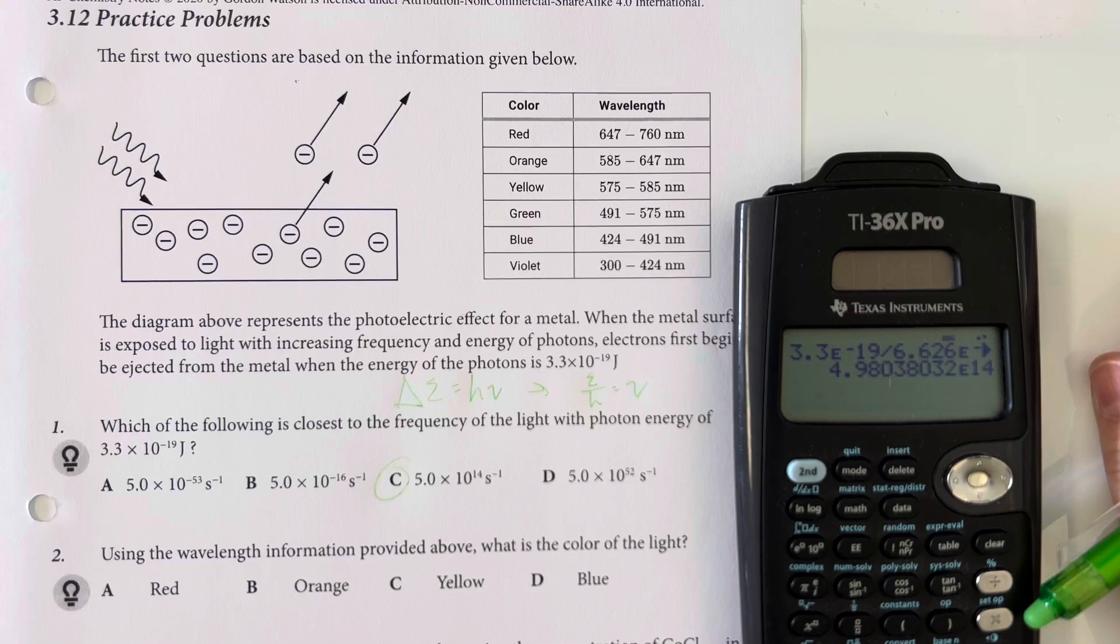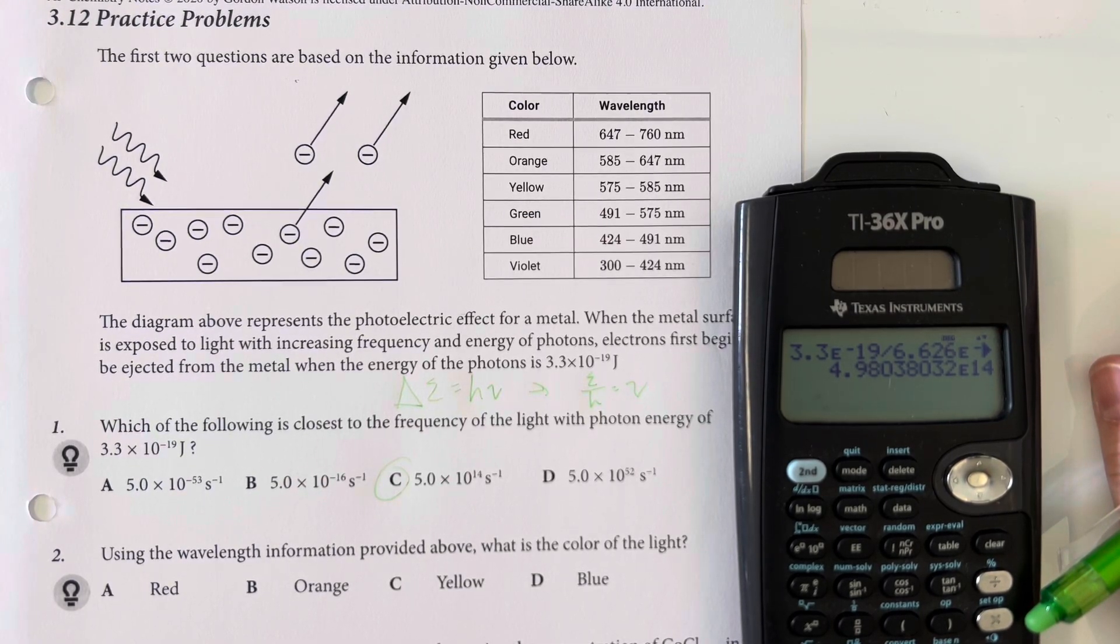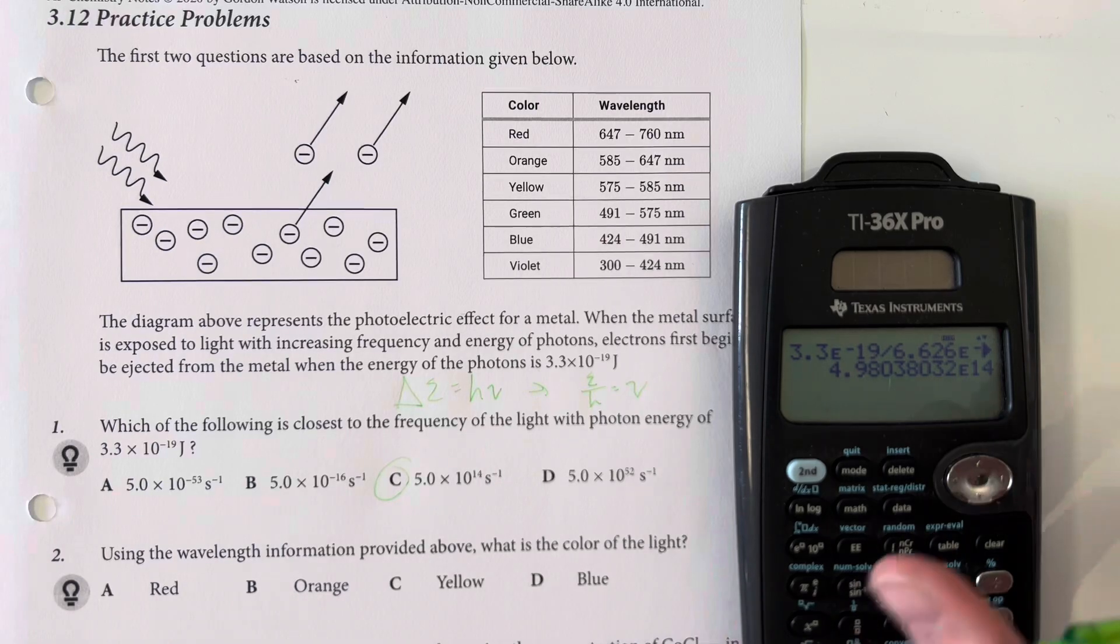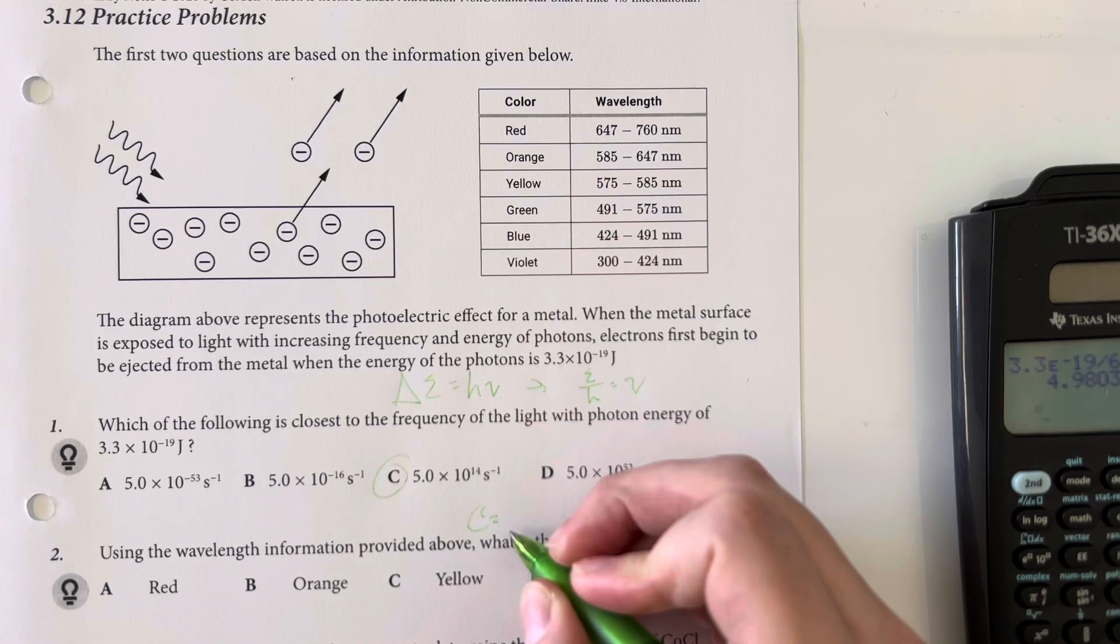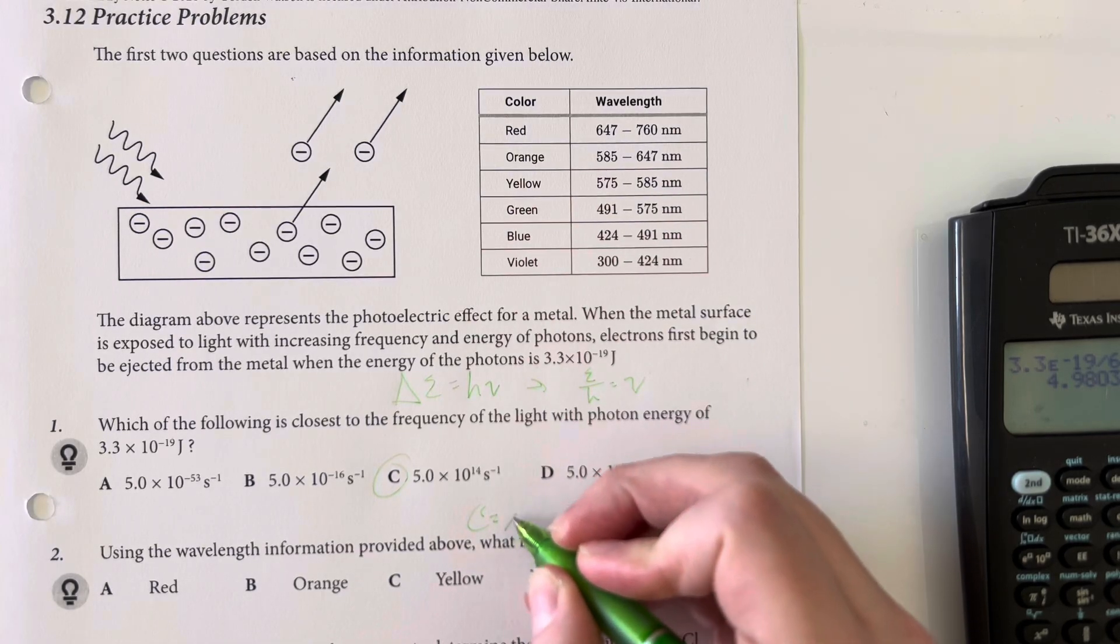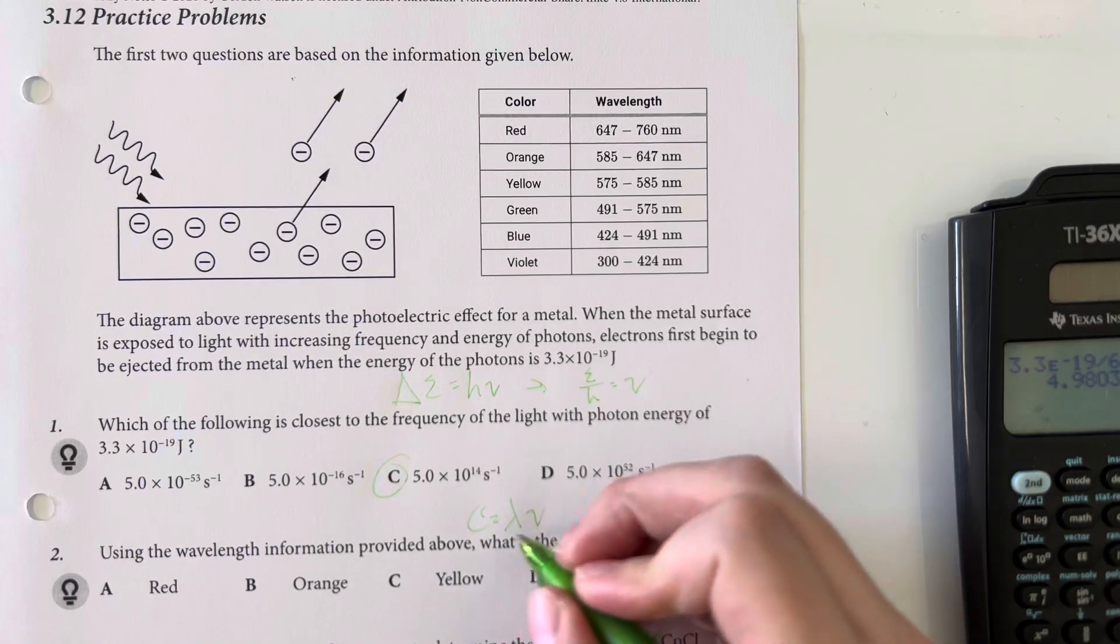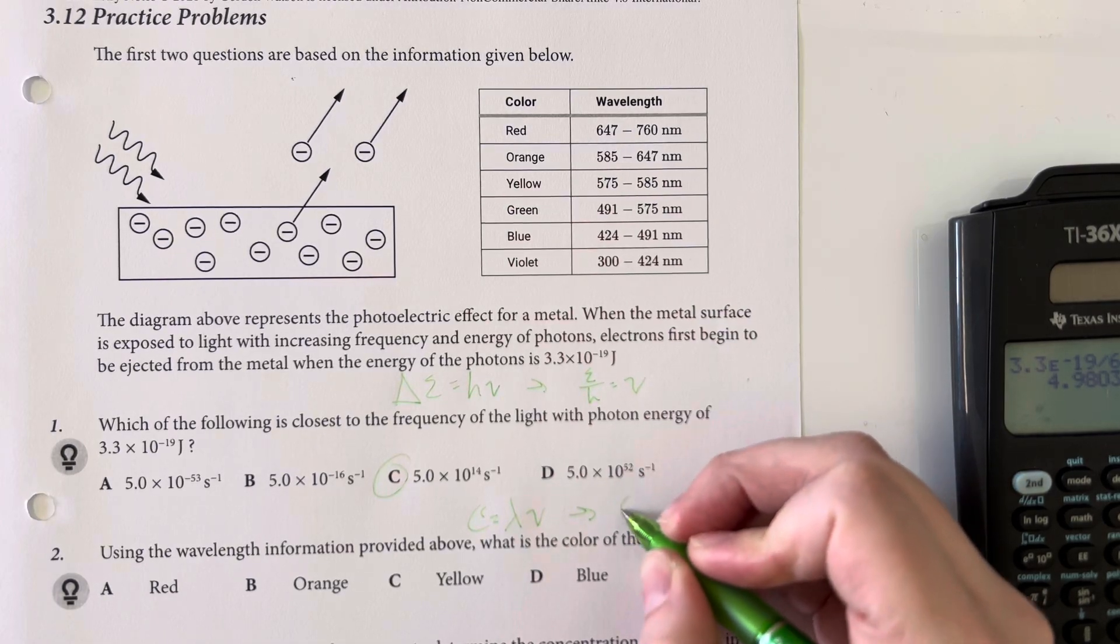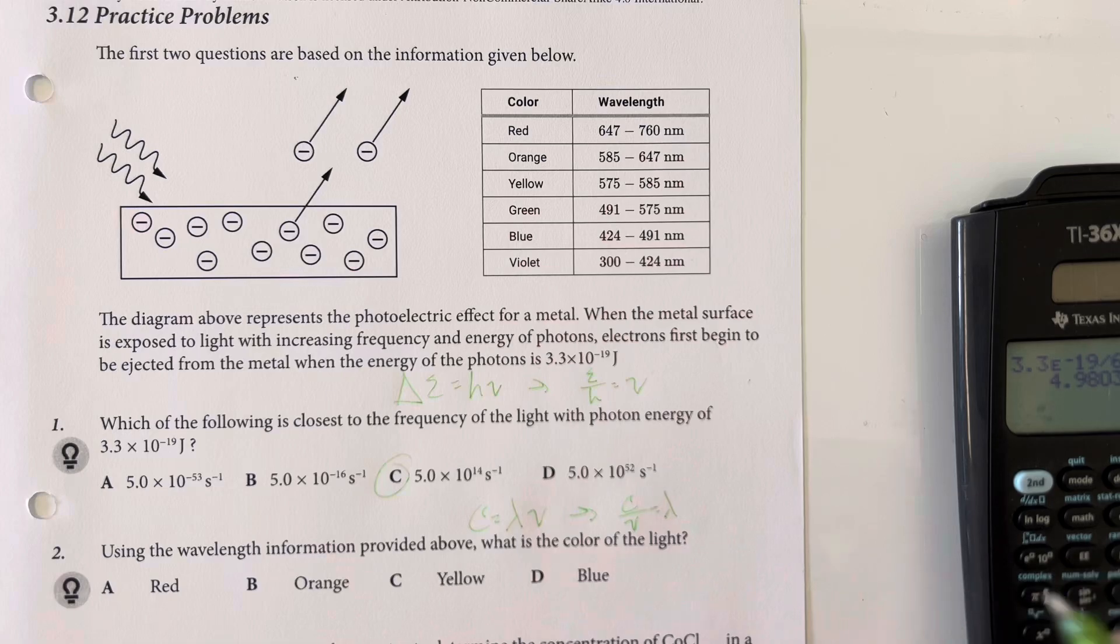Using the wavelength information provided above, what color is that light. So this is specifically giving us the frequency and we need the wavelength. The equation is going to be that the speed of light is equal to the frequency times the wavelength. So we need to solve for wavelength. We will have the speed of light divided by the frequency gives us our wavelength.